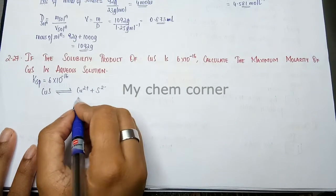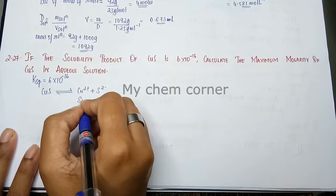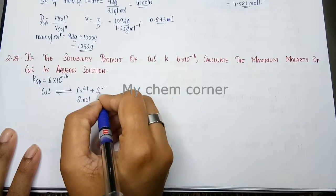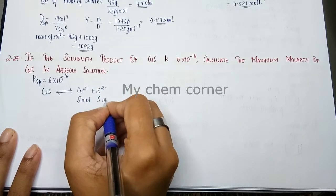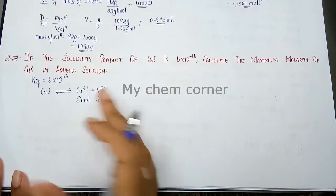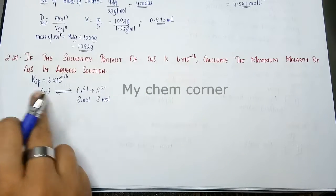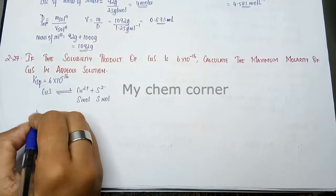Now, the concentration of Cu2+ ion is taken as S moles and concentration of sulfide is taken as S mole. We do not know what it is. We will substitute this in the solubility product equation.